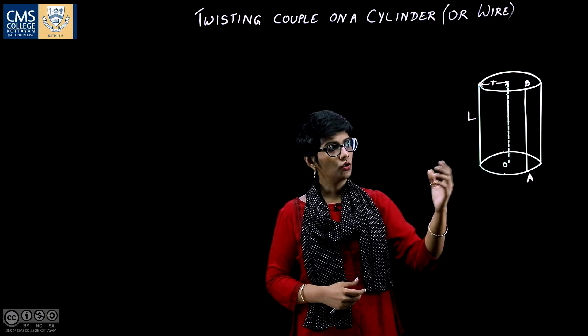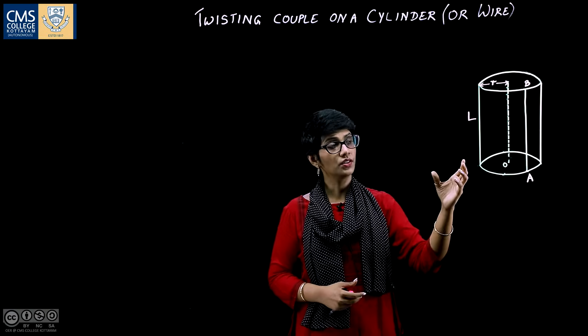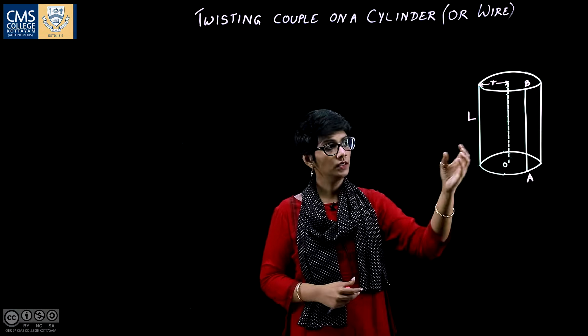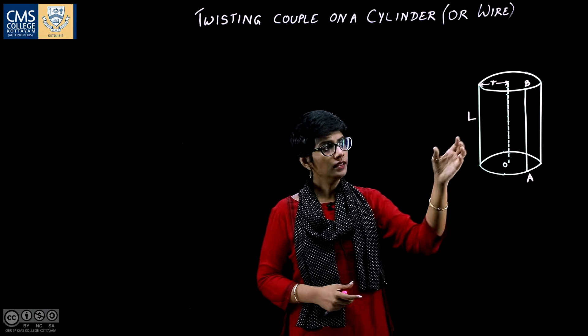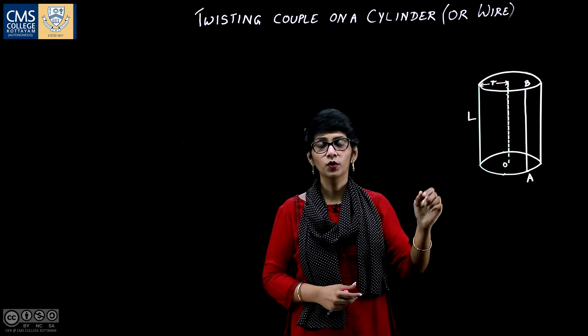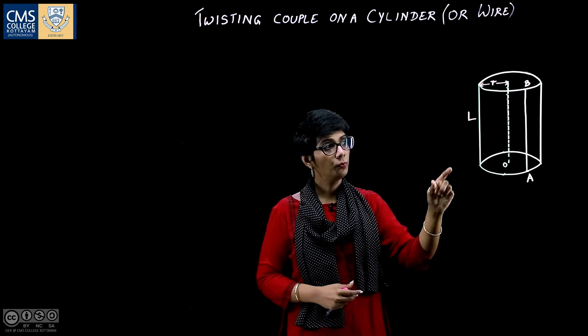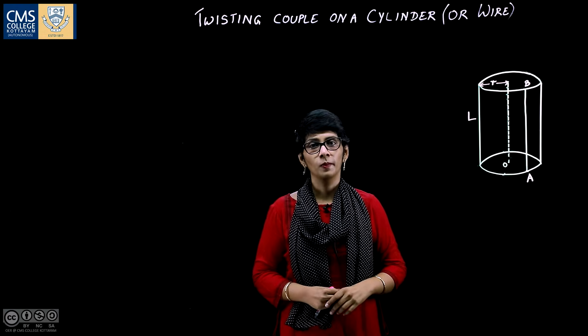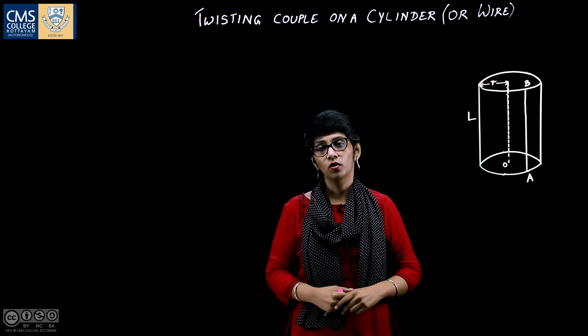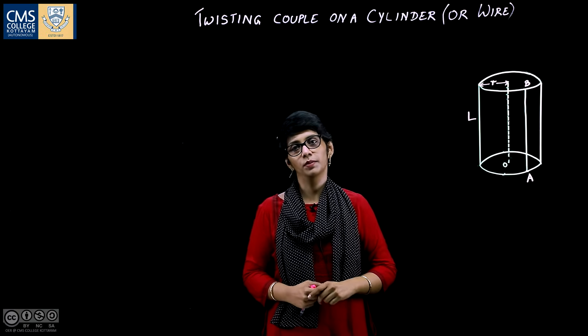A rod under torsion develops a restoring couple. This is due to the elasticity of the material and this restoring couple is equal in magnitude but opposite to that of the applied external force. This restoring couple is also called the torsional couple.